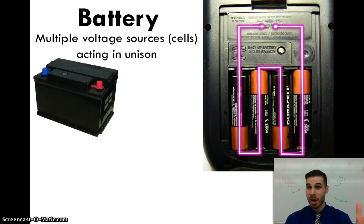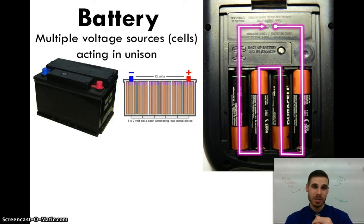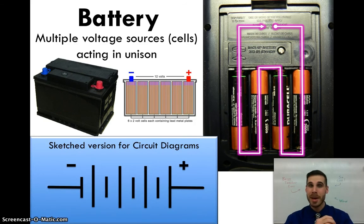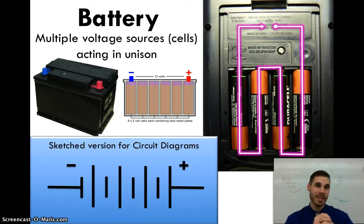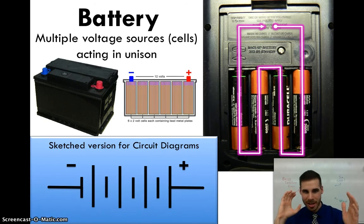Car batteries are very similar. It's not a misnomer to call a car battery a battery, even though it looks like one object, because if you open it up you'd see several cells inside. A car battery typically contains six 2-volt cells, which nominally creates a 12-volt battery to power your car. In our circuit diagrams, a battery is basically just an amalgamation of many cells drawn in sequence — the side with the long line is still the positive end, and the short line is still the negative end. Positive is longer, negative is shorter.